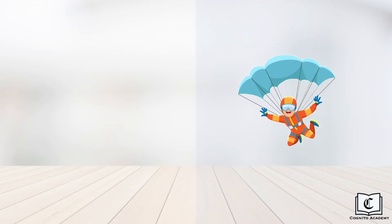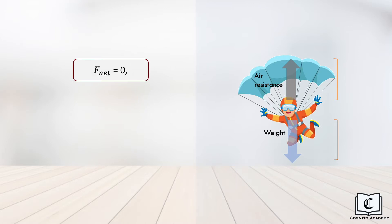Let's look at an example. A parachutist is falling at constant terminal velocity. Let's draw the forces acting on the parachutist. We have its weight pointing downwards and air resistance acting outwards. Notice that the magnitude of both forces are equal, cancelling each other out. We can therefore conclude that the net force on the parachutist is zero.